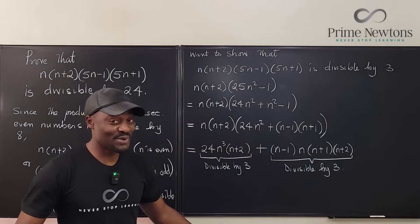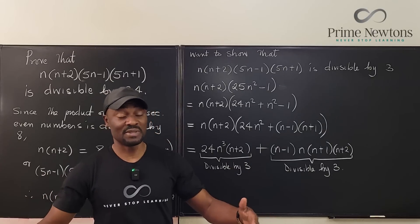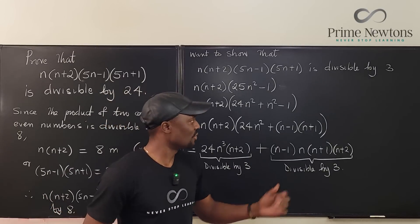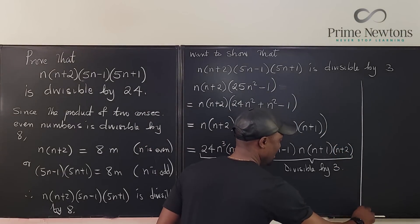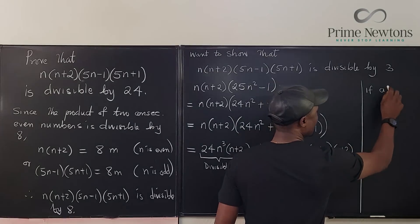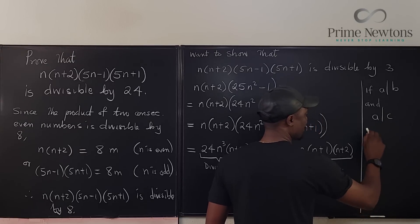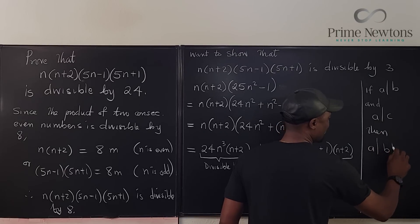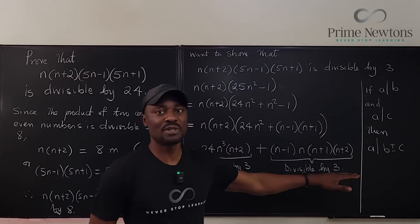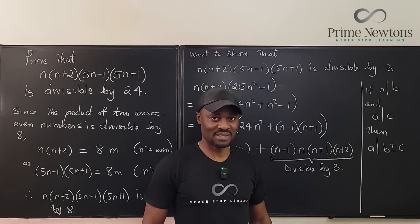And remember from our number theory understanding, if two numbers are divisible by another number, then the sum is also divisible. Let's just put that somewhere. Recall? If A divides B and A divides C, then A divides B plus or minus C. It doesn't matter what you do with the two of them. A will divide any linear combination of B and C.